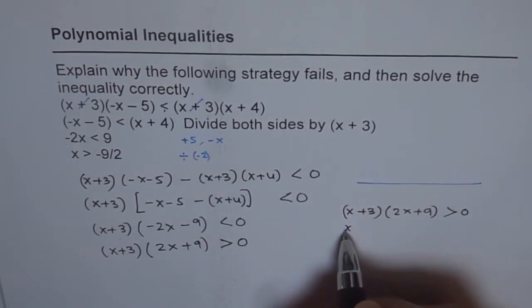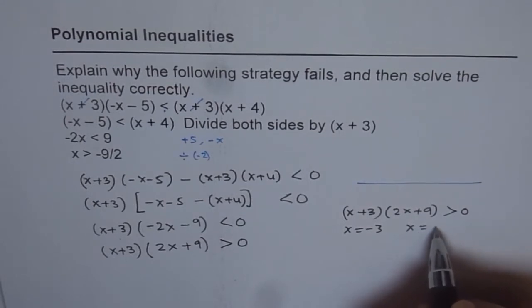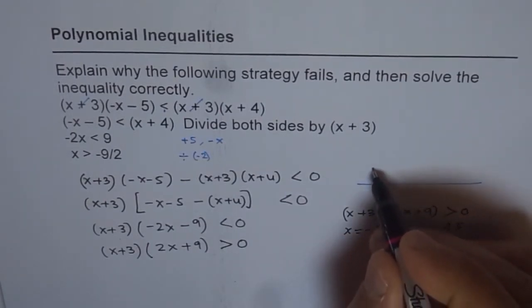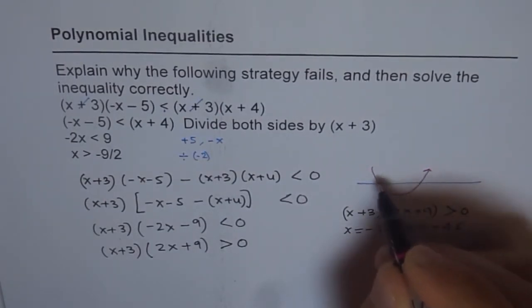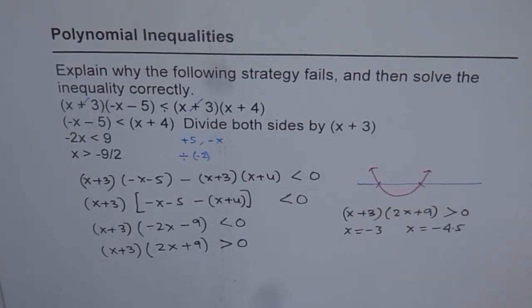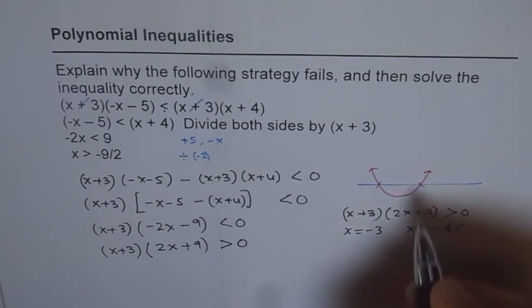So it is x plus 3 times 2x plus 9 greater than 0. It has got two zeros. One is at x equals minus 3. The other one is at x equals minus 9 by 2, which is minus 4.5, correct? So these are my two zeros. And it also represents a parabola, degree 2. So our graph is going to be kind of like this. Where the zeros are at which point? Minus 3 and minus 4.5.